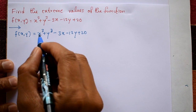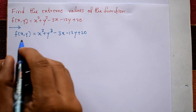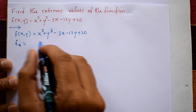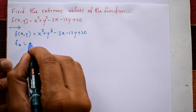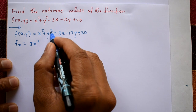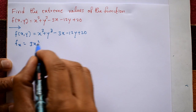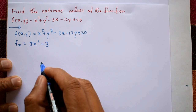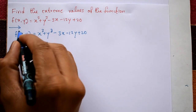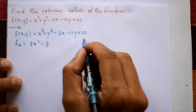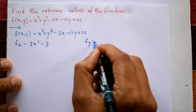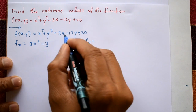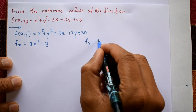First, differentiate with respect to x partially. We get fx = ∂f/∂x = 3x² - 3, since y is treated as a constant, so the y terms vanish. Again, differentiate the function with respect to y partially. We get fy = ∂f/∂y = 3y² - 12.